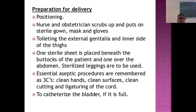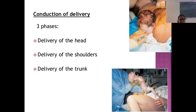Positioning is first. The nurse and obstetrician scrub up and put on a sterile gown, mask, and glasses. Toileting of the external genitalia and inner side of the thighs is done. One sterile sheet is placed beneath the buttocks and one over the abdomen, and sterile leggings are applied. The three C's — clean hands, clean surfaces, and clean cutting and ligatures — must be remembered. Catheterize the bladder if full. Delivery is conducted in three phases: delivery of the head, delivery of the shoulders, and delivery of the trunk.